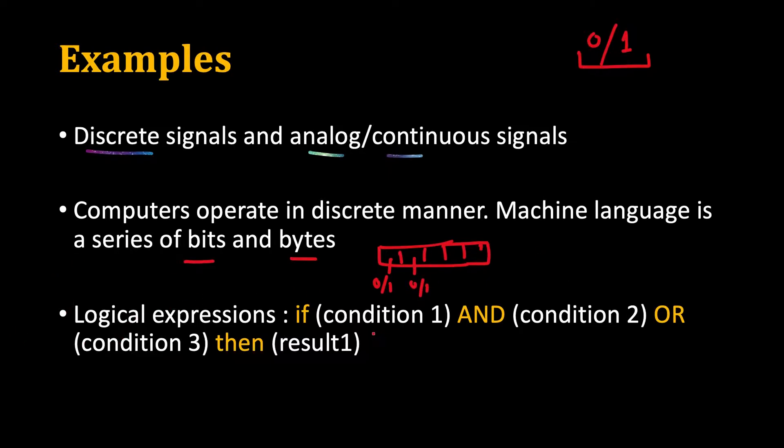Another example could be some logical expression like if condition 1 is satisfied and condition 2 is satisfied or condition 3 is satisfied, then give some result 1. So this kind of expressions also fall under the category of discrete mathematics.